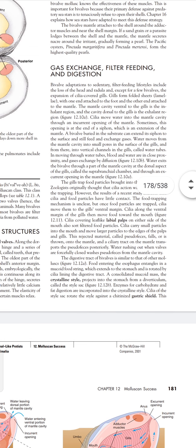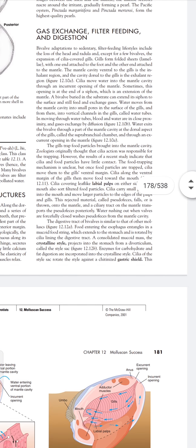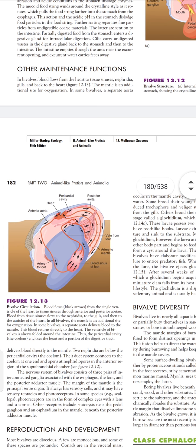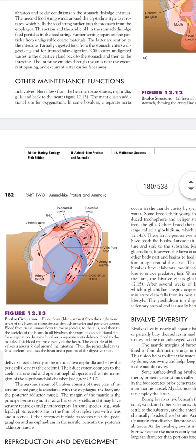Now students, we will study about the other maintenance functions. There are some other maintenance functions that are present in Bivalvia. First, there is the blood vascular system. Blood flows from the heart to the tissue sinuses, nephridia, and gills. It then moves back to the heart. The mantle is an additional site for oxygenation. In the mantle, oxygenation also takes place. Therefore, a separate aorta supplies blood directly to the mantle. This is also a maintenance function in the Bivalvia class.